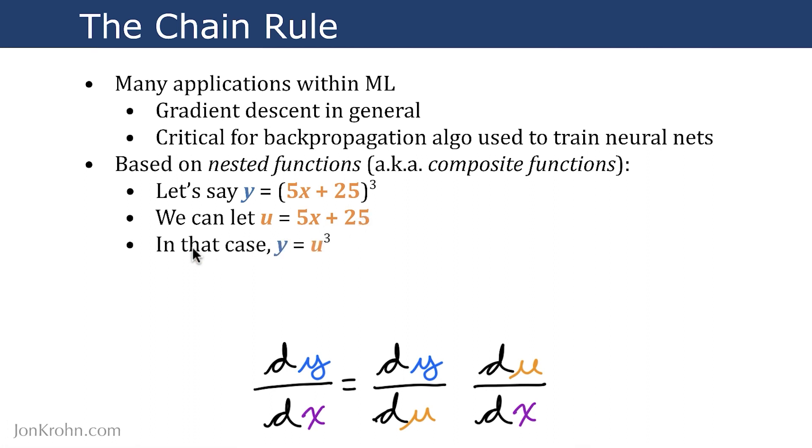And in that case, then the outer function now is simply y = u³. So y is now a function of u, and u is itself a function of x.